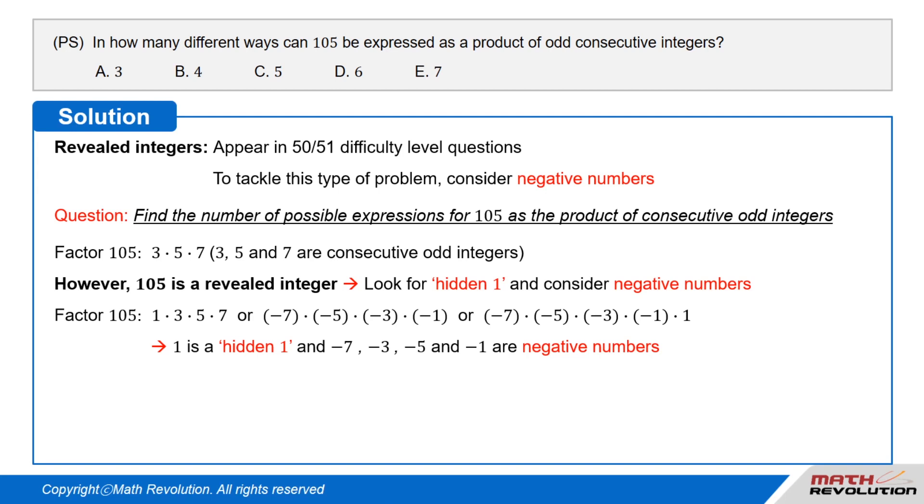Where 1 is a hidden 1 and negative 7, negative 5, negative 3, and negative 1 are negative numbers. Therefore, we can factor 105 in four different ways.